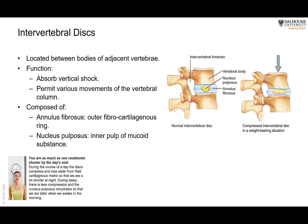The joint between two vertebral bodies is a secondary cartilaginous joint called the intervertebral disc. This disc bears a great deal of weight. It consists of an outer circular rim of fibrocartilage called the annulus fibrosus — 'annulus' meaning ring or circle — and in the middle there is a gelatinous or mucoid cartilaginous material called the nucleus pulposus. Together, the annulus fibrosus and nucleus pulposus allow the disc to withstand high pressure.